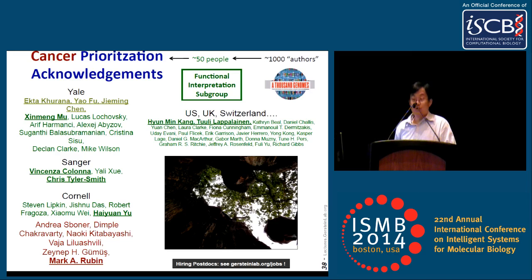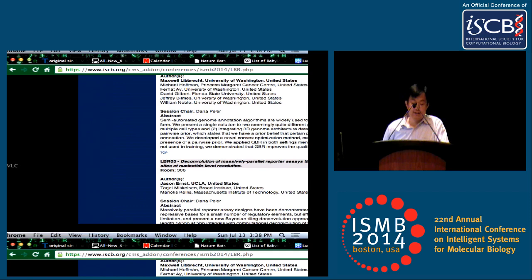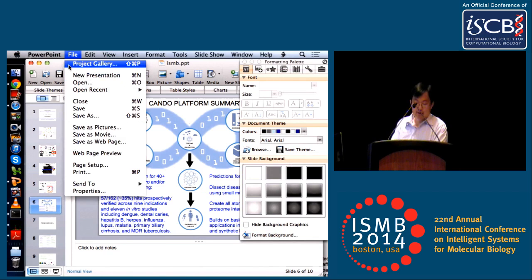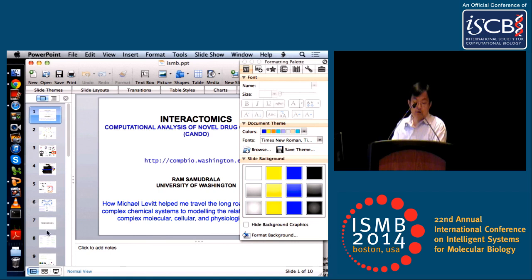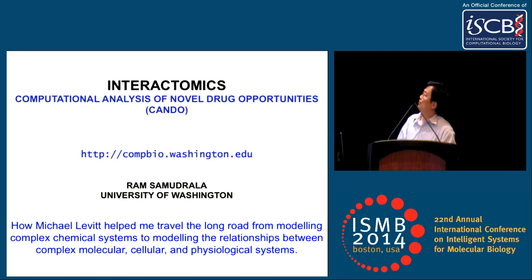He's currently a faculty member at the University of Washington in the Department of Microbiology, leading a research group in computational biology and bioinformatics. He has done a lot of great work in the field of computational genomics, bioinformatics, protein structure calculation, and drug design. He has won many awards, most recently the NIH Director's Pioneer Award. He's going to be telling us about interactomics.